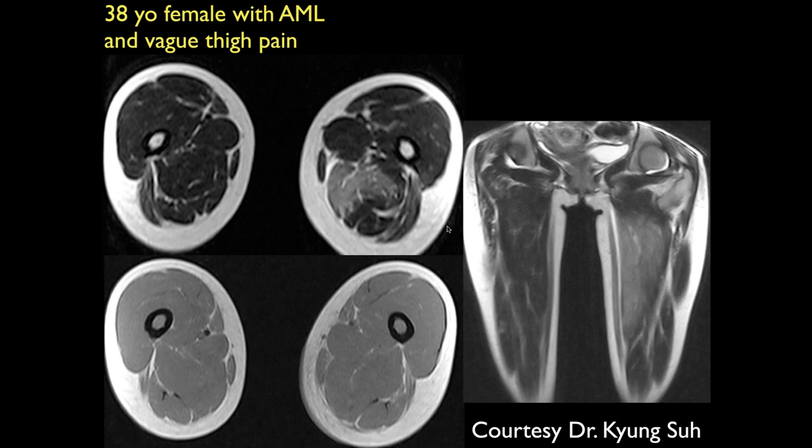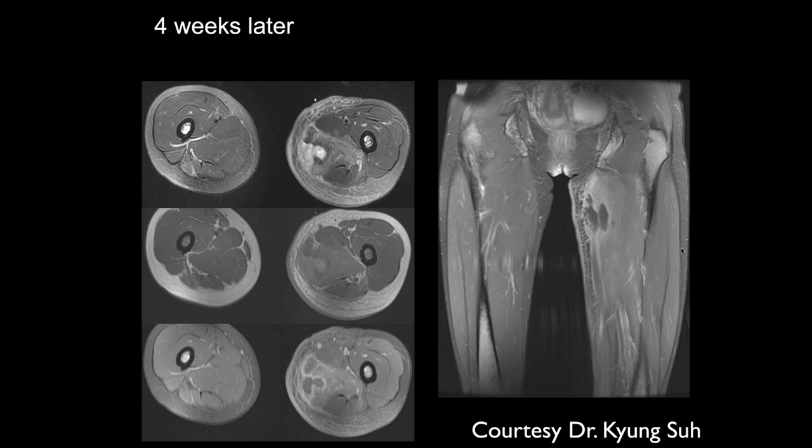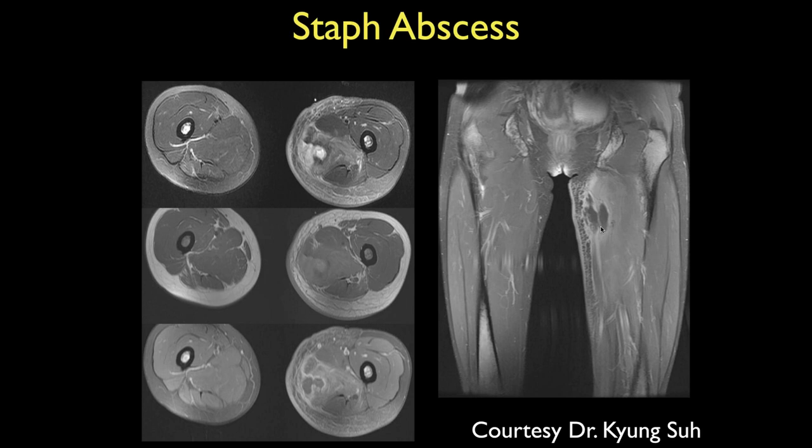A 30-year-old female with AML and vague thigh pain. In the left thigh there's ill-defined increased signal within the hamstrings/adductor region resembling edema. Four weeks later, a focal fluid collection with peripheral enhancement develops within the muscles — concerning for myositis progressing to intramuscular abscess. This was confirmed as a staph abscess.